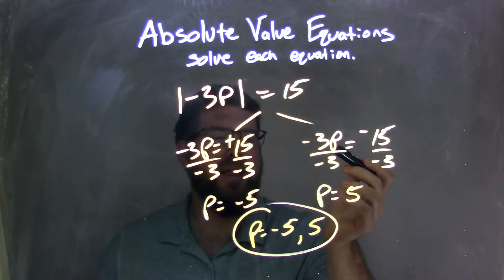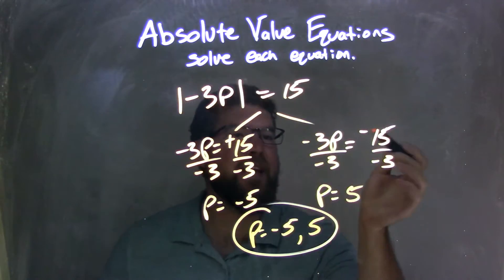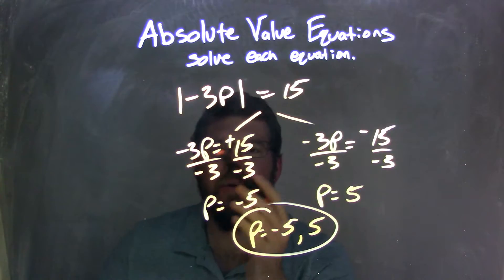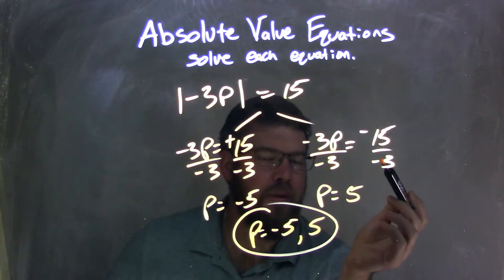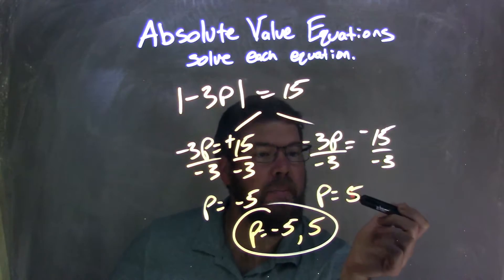Negative 3p here, negative 3p there, and then we have positive 15 and negative 15. Break it apart to positive and negative. With negative 3p equals positive 15, we divide by negative 3 to both sides. It got me negative 5 here. Divided by negative 3 to both sides here, it got me a positive 5.